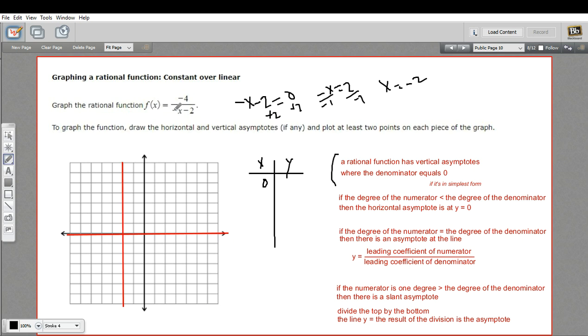So if I put in 0 for x, I'm going to get negative 4 over negative 2. That's a positive 2. So the point (0, 2) is on here.